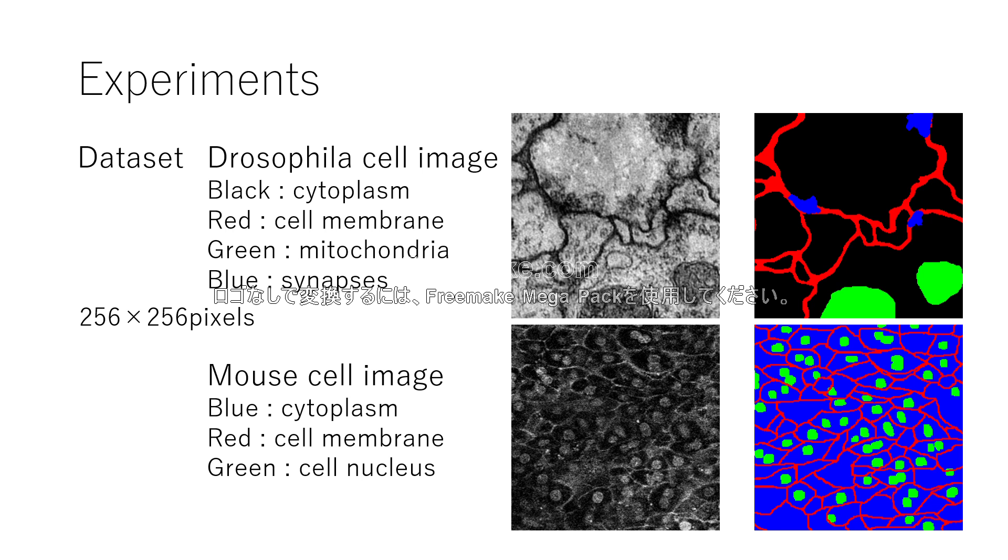We use two datasets. One is Drosophila cell image dataset. This dataset consists of four classes: blue is cytoplasm, red is cell membrane, green is mitochondria, and blue is synapse.